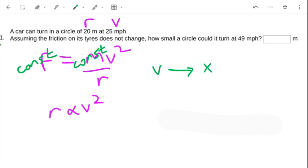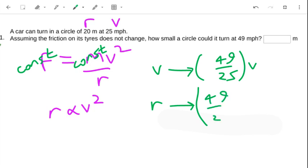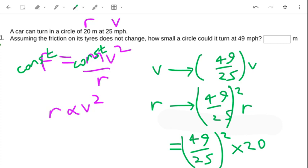So what is v doing? Well, it's actually multiplying from 25 to 49, so it's multiplying by 49 over 25. So it becomes 49 over 25th of the original. So what's r going to do? Well, that's going to be 49 over 25th squared times the original. And I can work that out, that's going to be 49 over 25 all squared times the original radius which is 20, and that works out to 76.8 meters.